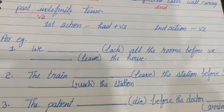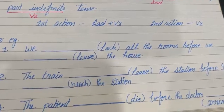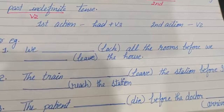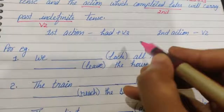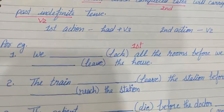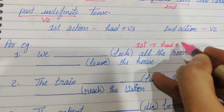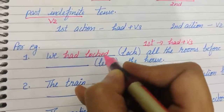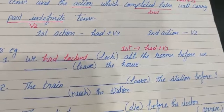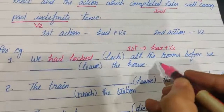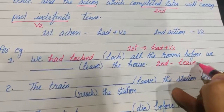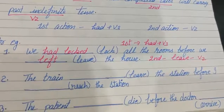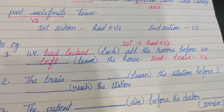Let's see some examples. We — lock all the rooms before we — leave the house. So first, did we lock or did we leave? The first action was we lock the house, so there we will be using had plus V3. The answer becomes: we had locked all the rooms before we left the house. And the second action, we leave — leave's V2 would become left.